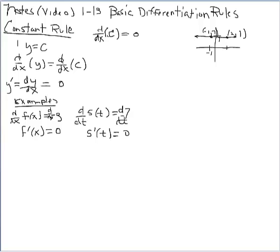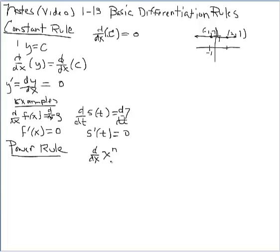That's the constant rule. Now let's take a look at the power rule. For the power rule we want to make sure we're working with a power function — a base of x with a numeric exponent, such as x to the third, x to the one-half, or x to the negative 7, where n is any real number. In the past, we found derivatives using the limit of the difference quotient, which was quite a lot of work. This shortcut rule simplifies things greatly.